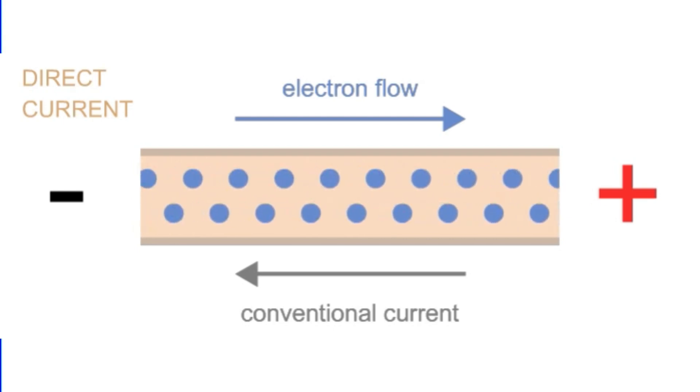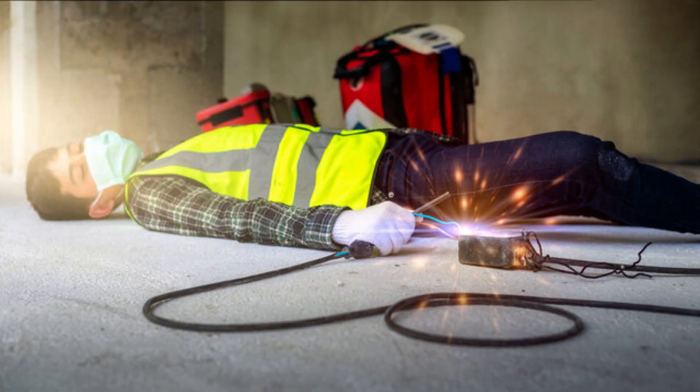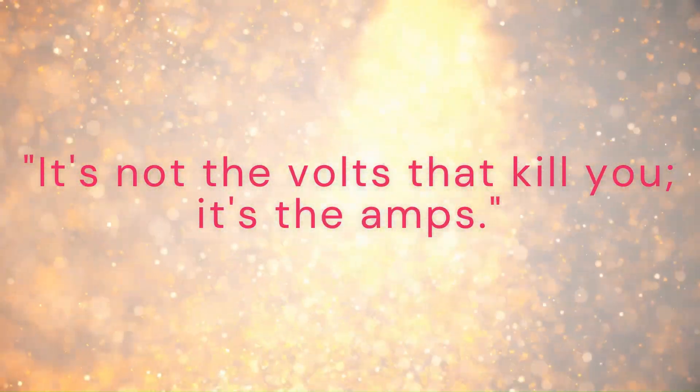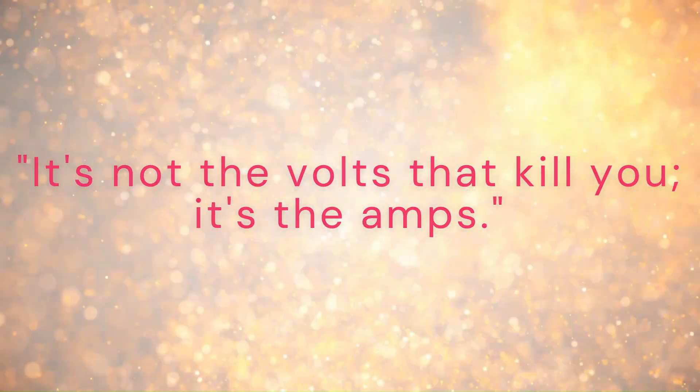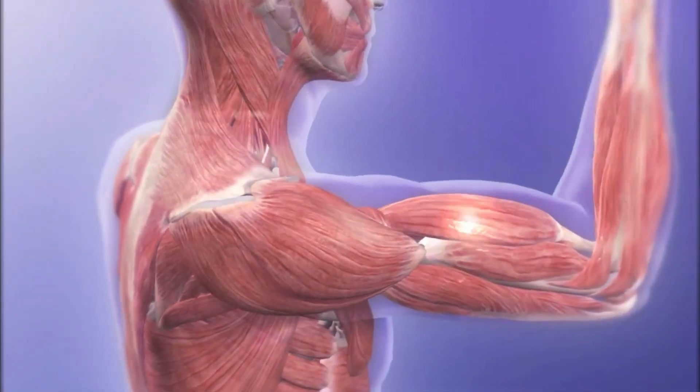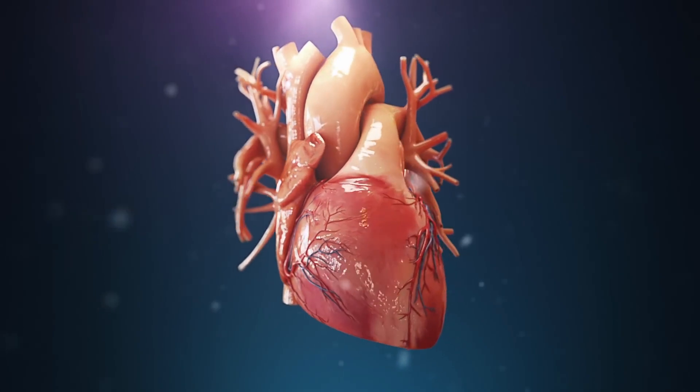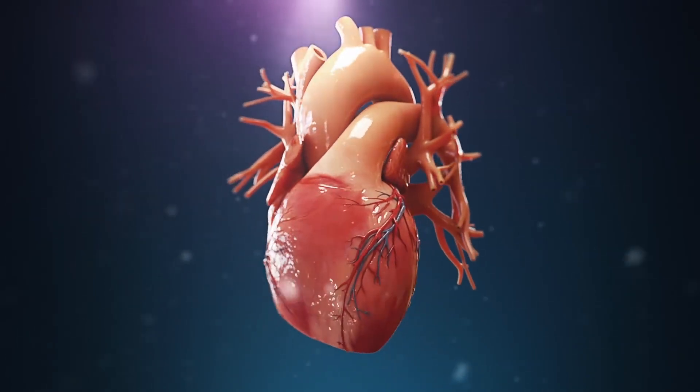However, shifting our focus to current, it's the flow of electrons that can disrupt the normal functioning of the human body. You might have come across the phrase, it's not the volts that kill you, it's the amps. This phrase points to the fact that current has the power to cause muscles to contract, stop the heart from functioning, and lead to serious injuries or even death.